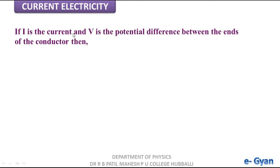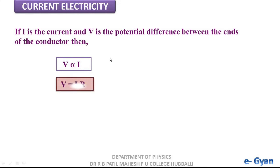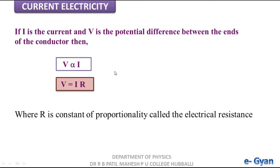If I is the current flowing through the conductor and V is the potential difference across its ends, then by Ohm's law V is proportional to I. Removing the proportionality sign, V equals I into R, where R is the constant of proportionality called electrical resistance. This is the mathematical form of Ohm's law.